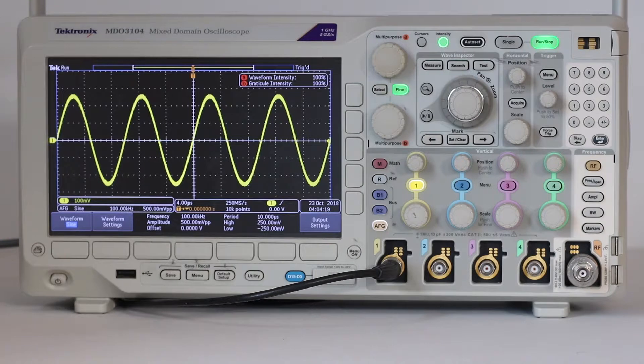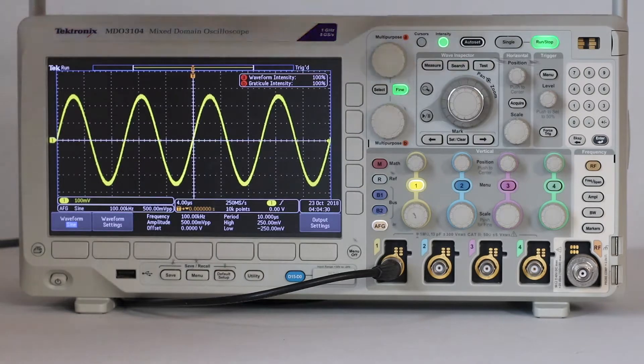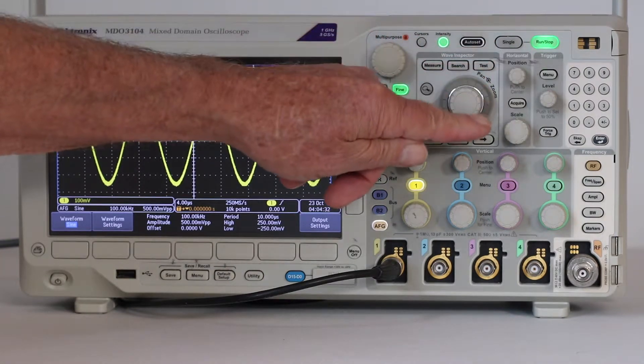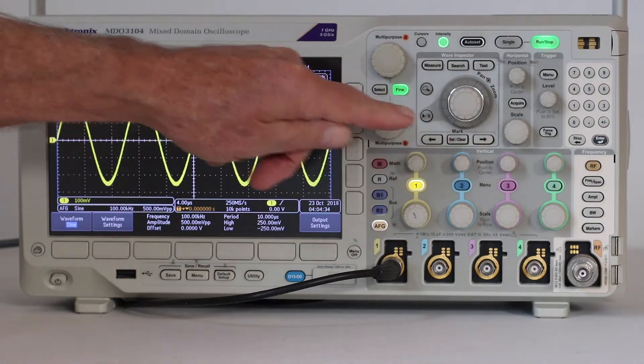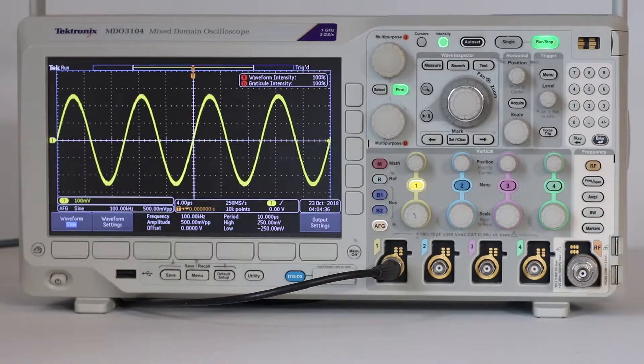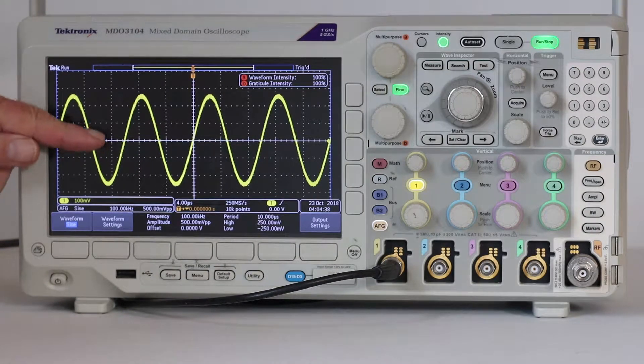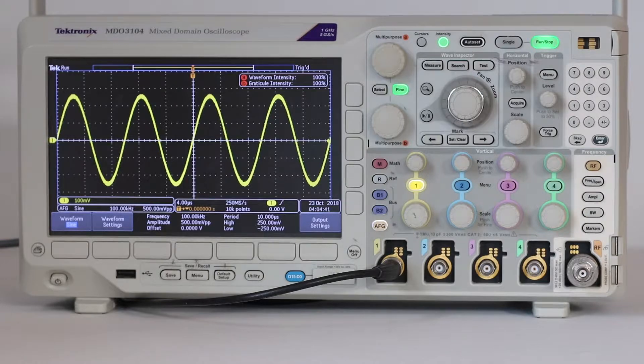A single set of scale and position knobs is located in this horizontal section above and below the all-important acquire button. They relate to the x-axis, which can define either time or the frequency domain.